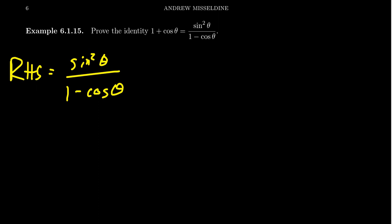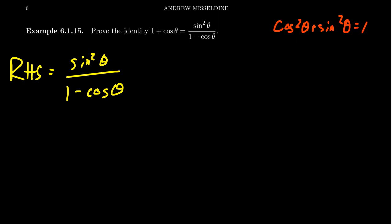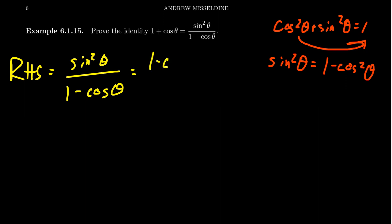We have sine squared over one minus cosine theta. The sine squared on top involves a square, but there are no squares on the left-hand side. A Pythagorean identity comes to mind: cosine squared theta plus sine squared theta equals one. If you move cosine squared to the other side, you get sine squared equals one minus cosine squared theta. If we make that substitution, you get one minus cosine squared theta over one minus cosine theta.